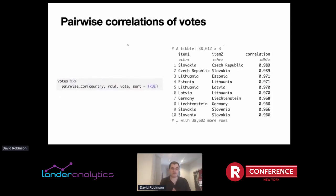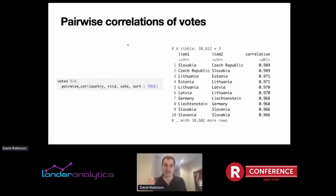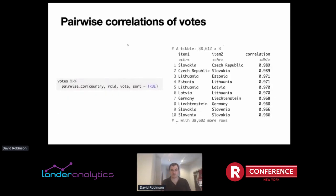In one step, we say: I want the correlation of countries linked by their roll call ID, examining the correlation of the vote element — the one, zero, negative one representation of yes or no. With that, we find pairwise correlations between each country in terms of their votes. We find that Slovakia and the Czech Republic almost always vote together — they're the most correlated pair of countries in the United Nations. Lithuania and Estonia, Latvia and Lithuania, Germany and Liechtenstein all tend to vote together. In one step, we got from 733,000 observations of a country and a vote down to 38,000 pairs of countries and their correlations.